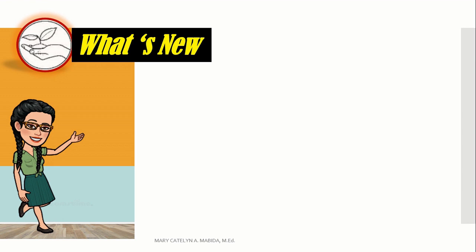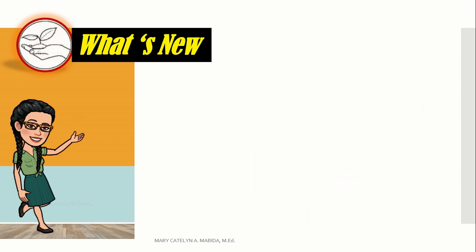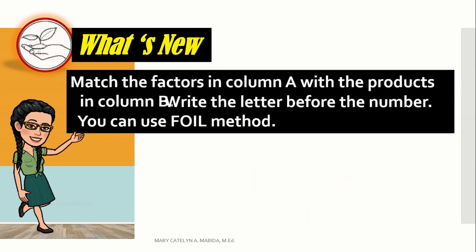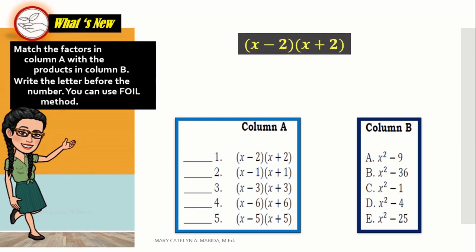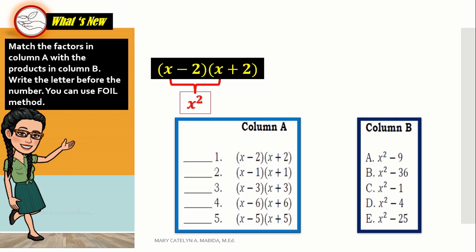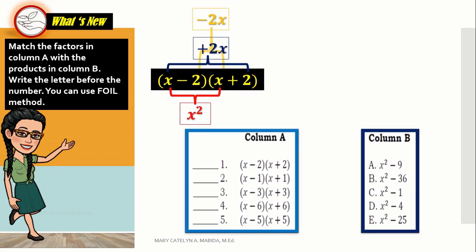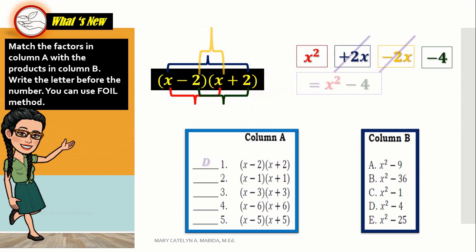What's new? Before we begin, please get your paper and pen. Directions: Match the factors in column A with the products in column B. Write the letter before the number. You can use the FOIL method. Let's go to number 1. The quantity of x minus 2 times the quantity of x plus 2. Using the FOIL method, x times x is x squared. x times 2 is 2x. Negative 2 times x is negative 2x. Negative 2 times 2 is negative 4. Combining like terms, the answer is letter D, x squared minus 4.